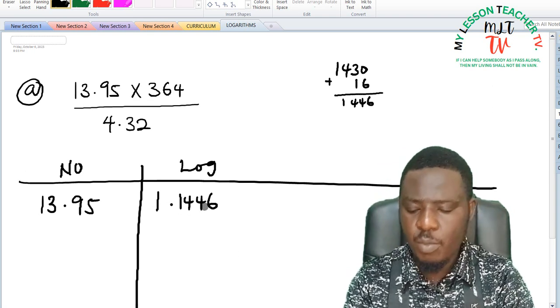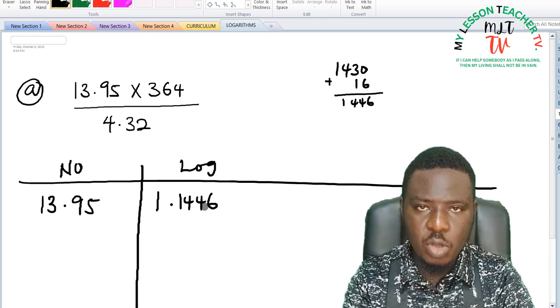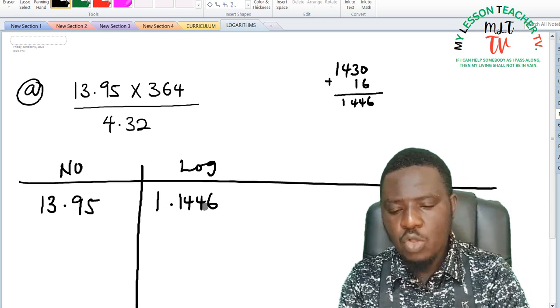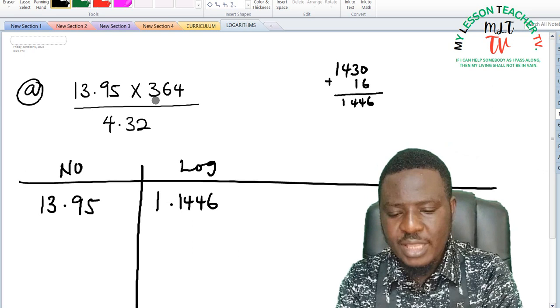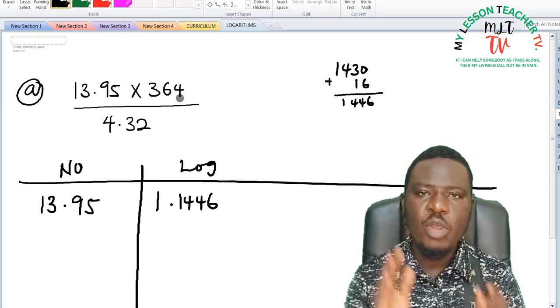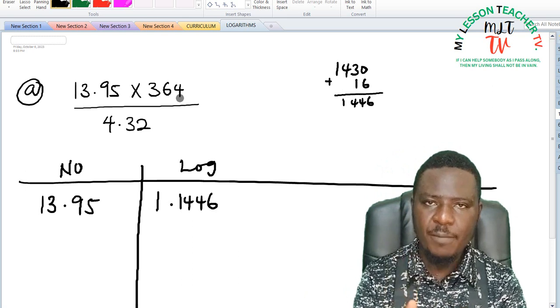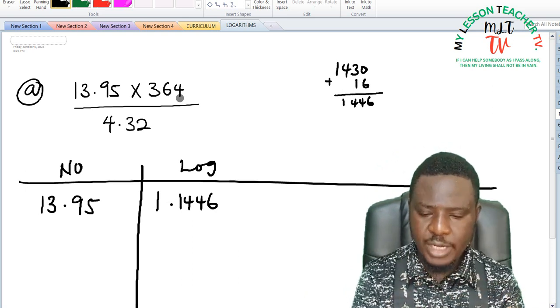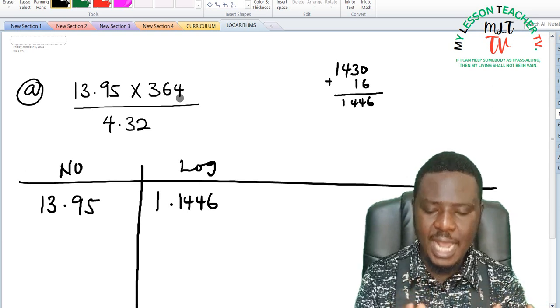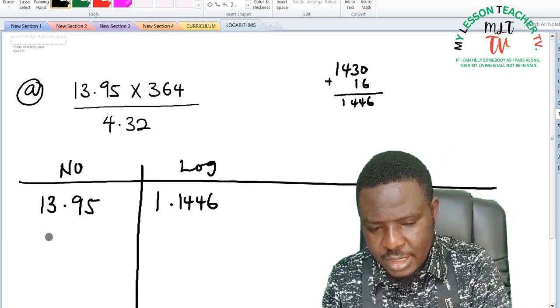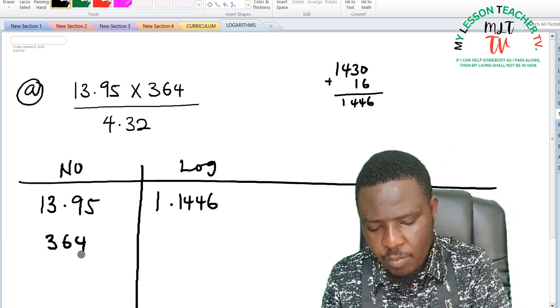So this is how to convert from numbers to logarithm. I will also do the same with 364. What you have to do in this case is to convert every number to logarithm, and thereafter you can do the multiplication and division. Next is 364.